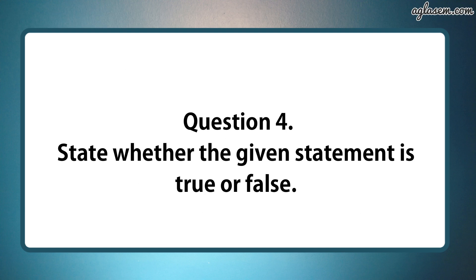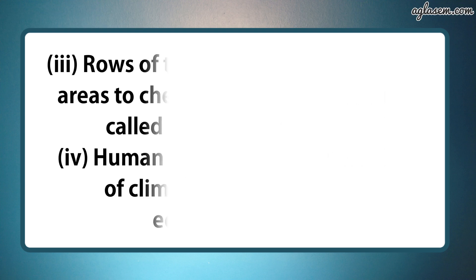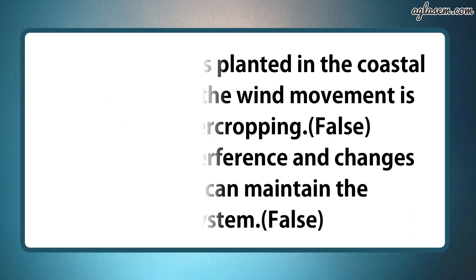Question number four says, state whether the given statement is true or false. Part one: Ganga Brahmaputra plain of India is an overpopulated region. Answer is true. Second: water availability per person in India is declining. Answer is true. Third: rows of trees planted in the coastal areas to check the wind movement is called intercropping. Answer is false. Fourth: human interference and changes of climate can maintain the ecosystem. Answer is false.